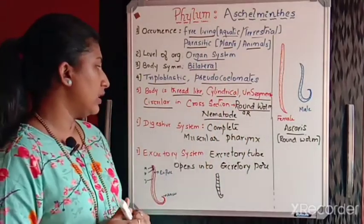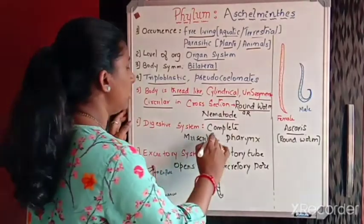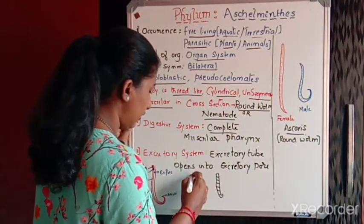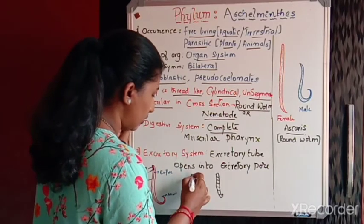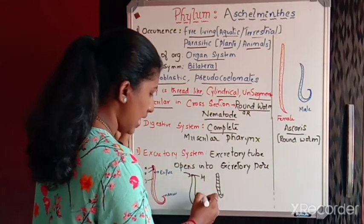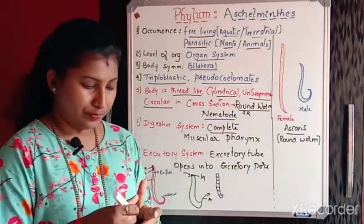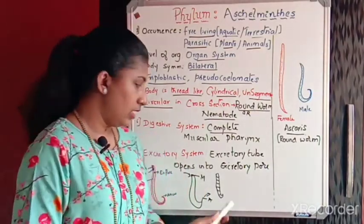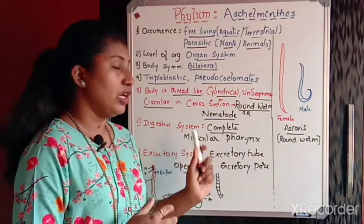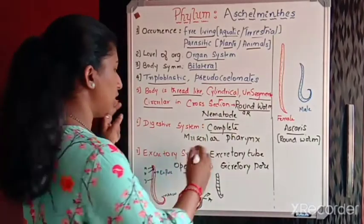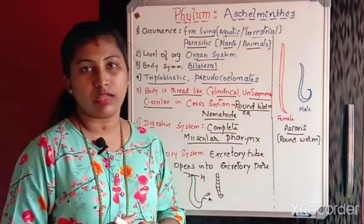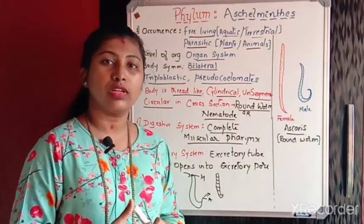Next, regarding the digestive system: here the digestive system is complete. They also have a very strong pharynx because the pharynx is muscular in nature. So the animals of Phylum Aschelminthes have a very muscular pharynx.